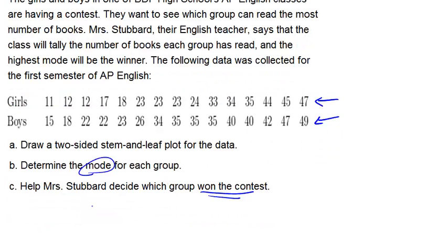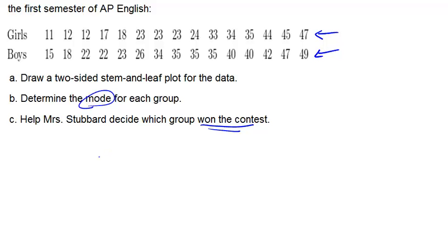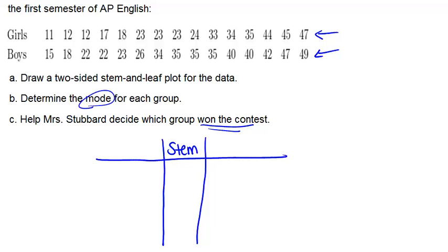Let's start by making our two-sided stem and leaf plot. To make a two-sided stem and leaf plot, you'll have the stem in the middle and the leaves on either side. We can put the girls over here and the boys over here. For the stem, you first have to decide what numbers you need. All of these numbers are two-digit numbers, so the stem can just be the tens digit and the leaves will be the ones digits.